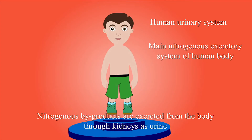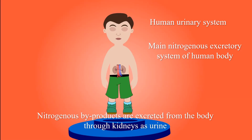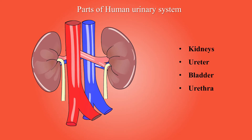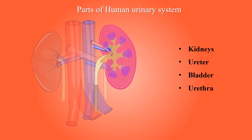In cell reactions, nitrogenous waste products accumulate inside cells. These nitrogenous waste products are toxic to cells and need to be excreted as soon as possible. The human excretory system is adapted for this function. The main nitrogenous excretory system of the human body is the human urinary system. The parts of the human urinary system are kidneys, ureter, bladder, and urethra.